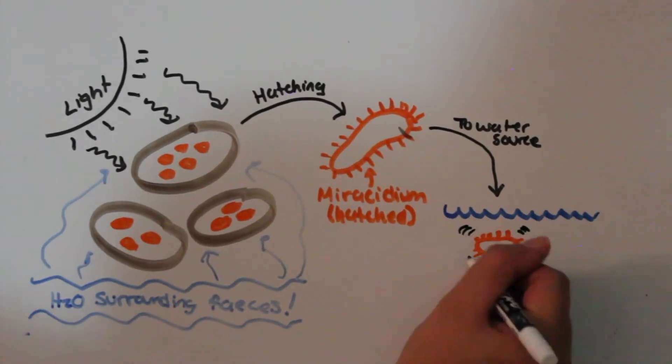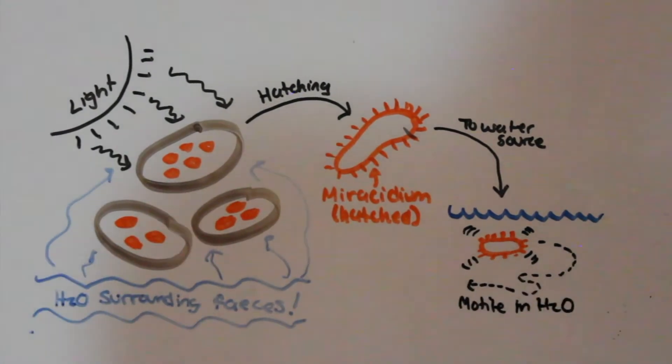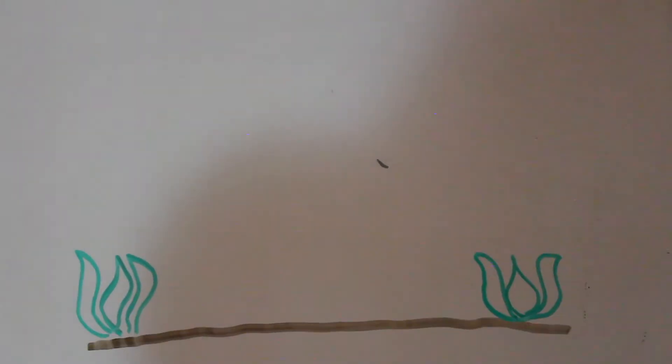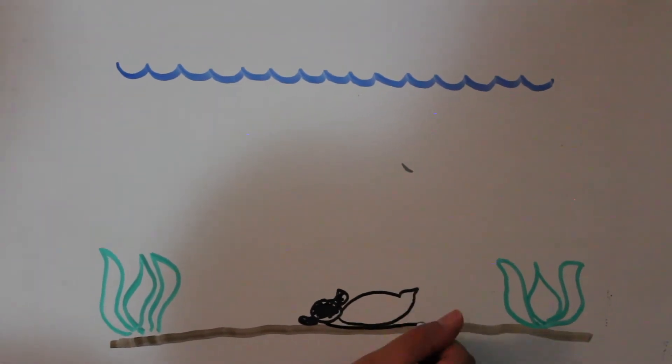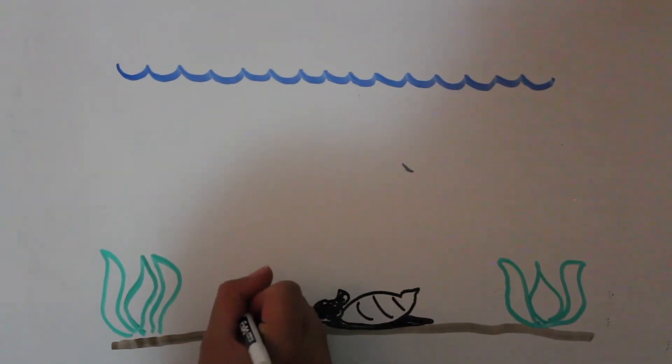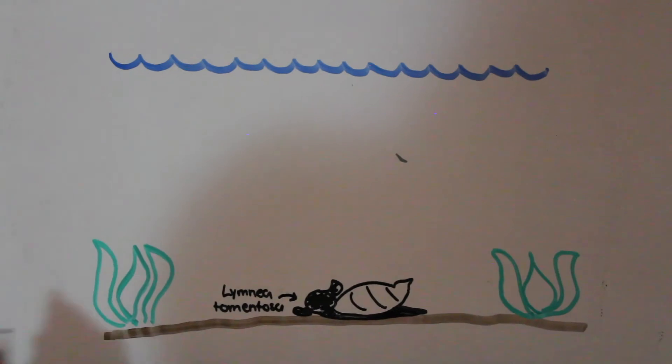Once hatched, myricidium enter the water source which surrounds the egg. Liver fluke has an intermediate host which are freshwater snails.